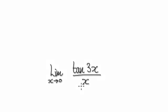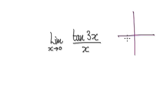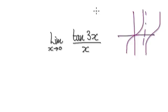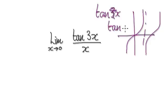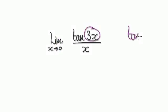Next one. Find the limit of this as x tends to 0. Press pause and have a go. First check — is it of indeterminate form? Remember, tan of x looks something like this. If you have tan(3x), it gets squeezed inwards, but it's still 0 at x = 0. So plug in 0: tan of 0 is 0, giving you 0 over 0.